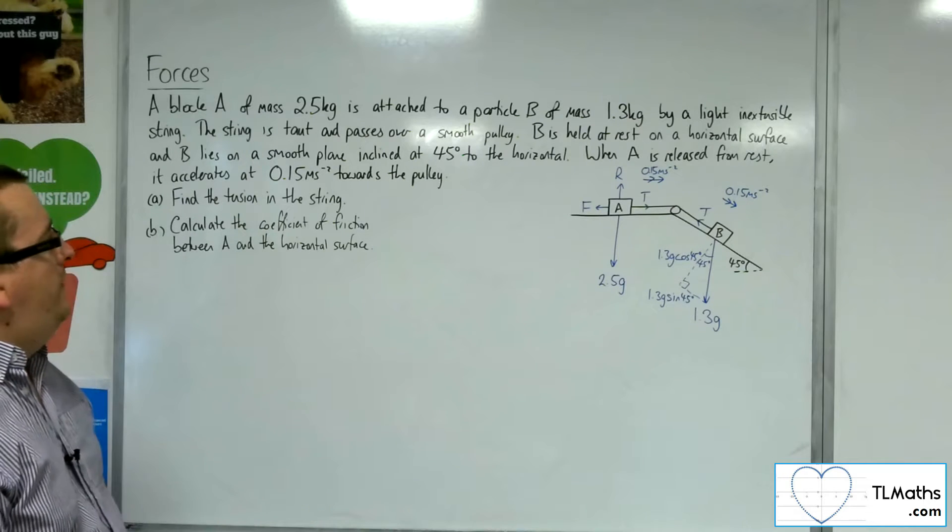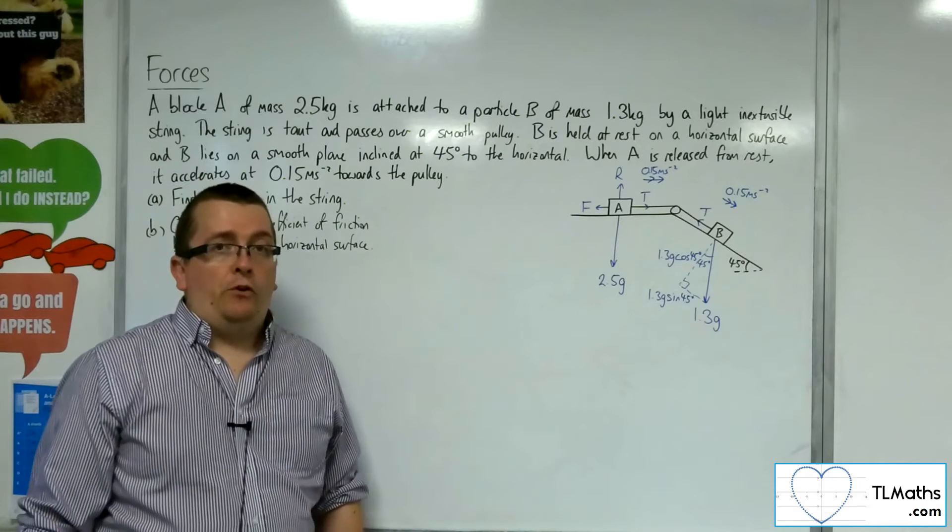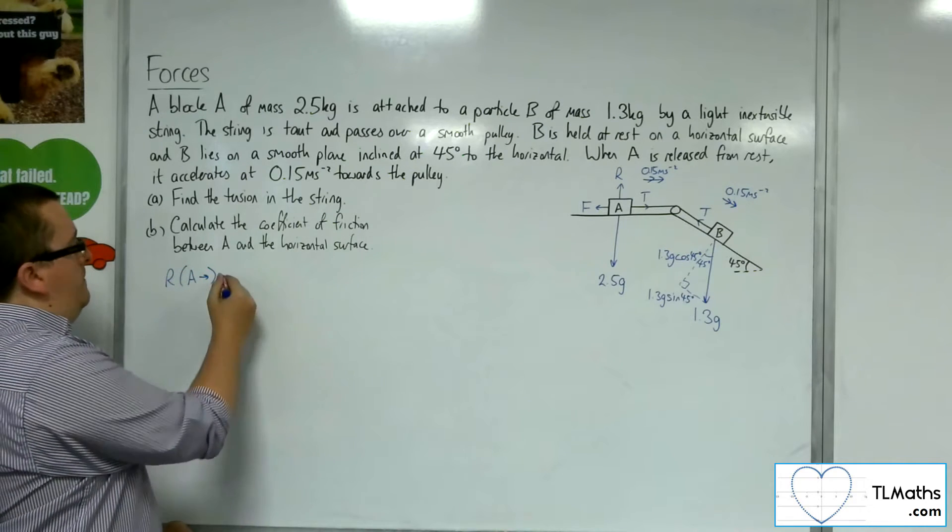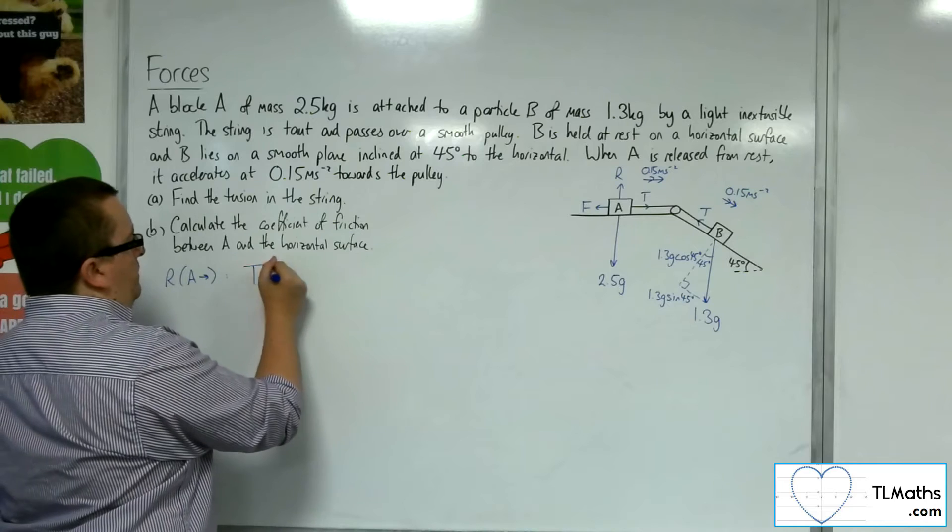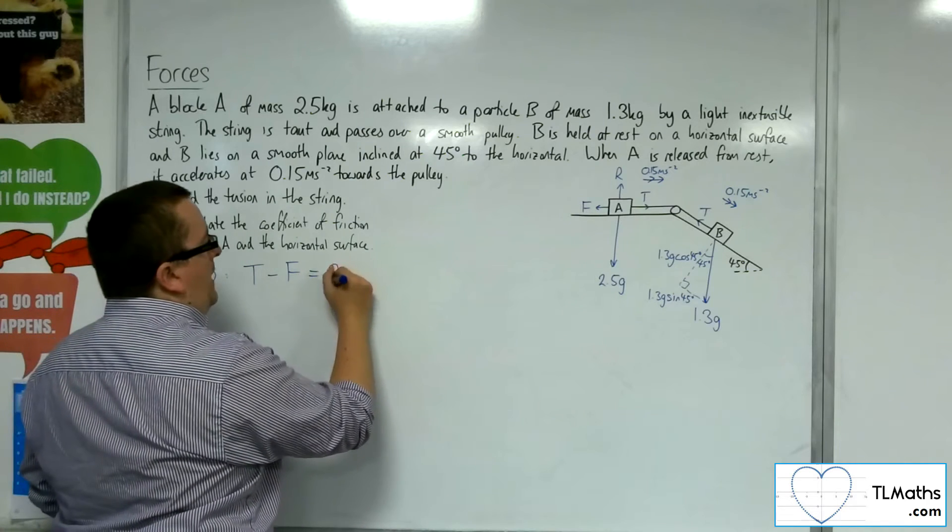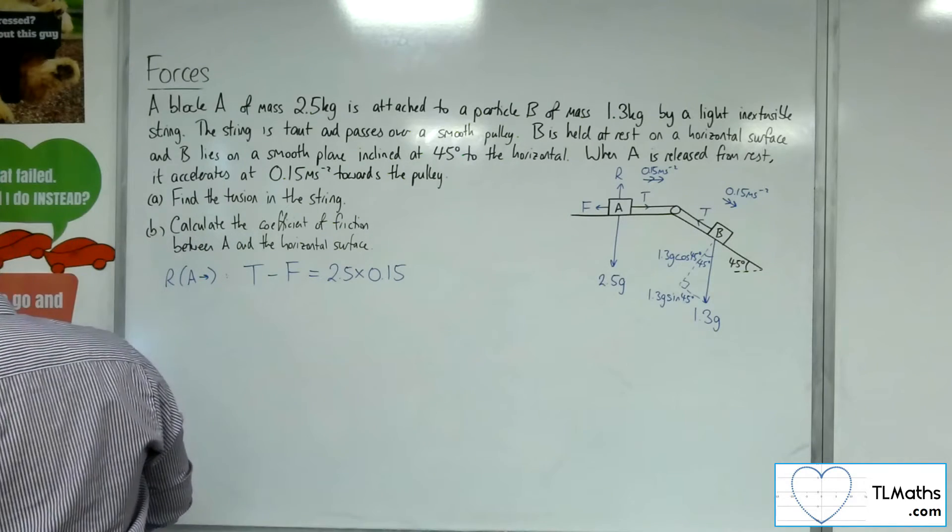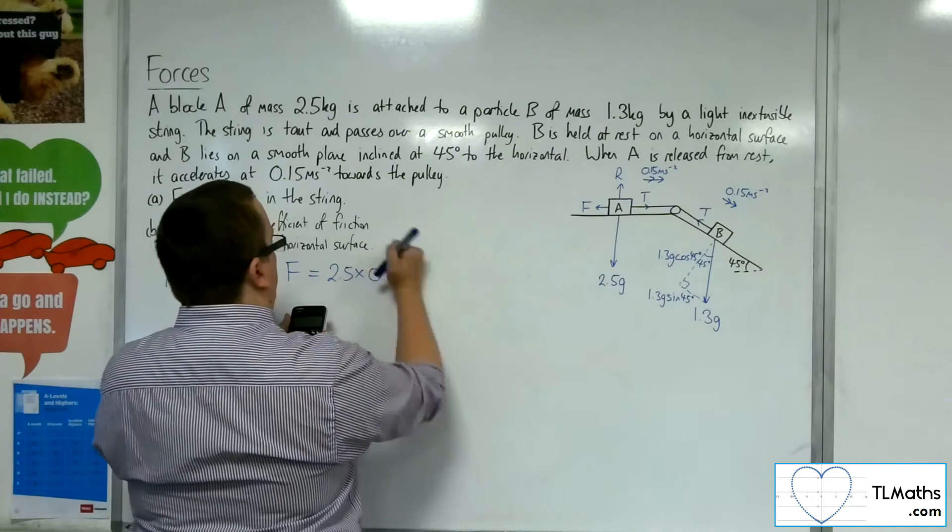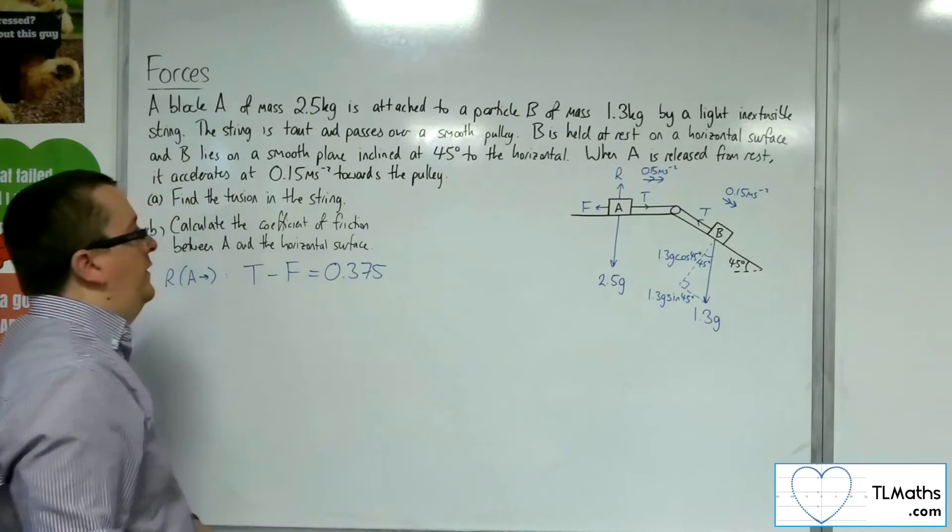So find the tension in the string. Right, so let's resolve horizontally for A then. So if I resolve A horizontally, then I'm going to take to the right as positive, the direction of motion. So I've got the tension, I've got the friction. So tension working in that direction, friction working in the opposite direction. And that's got to be equal to the mass times by the acceleration. So 2.5 times 0.15 is 3 eighths, so 0.375. So that's one equation.